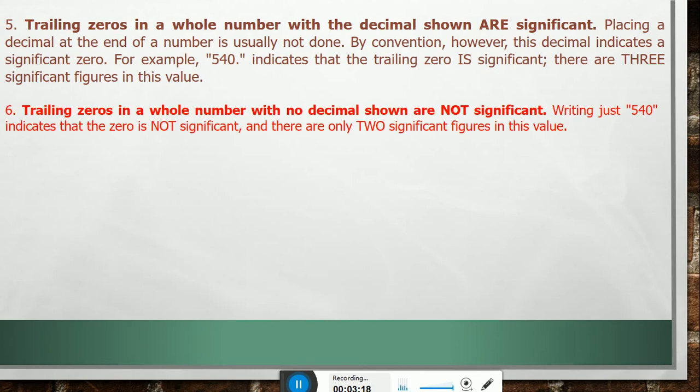Rule 6: Trailing zeros in a whole number with no decimal shown are not significant. Just like the previous example. Writing just 540 indicates that the zero is not significant and there are only two significant figures in this value.